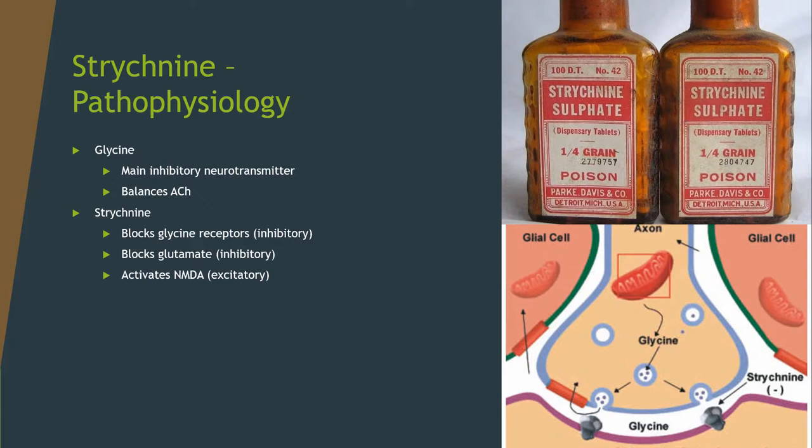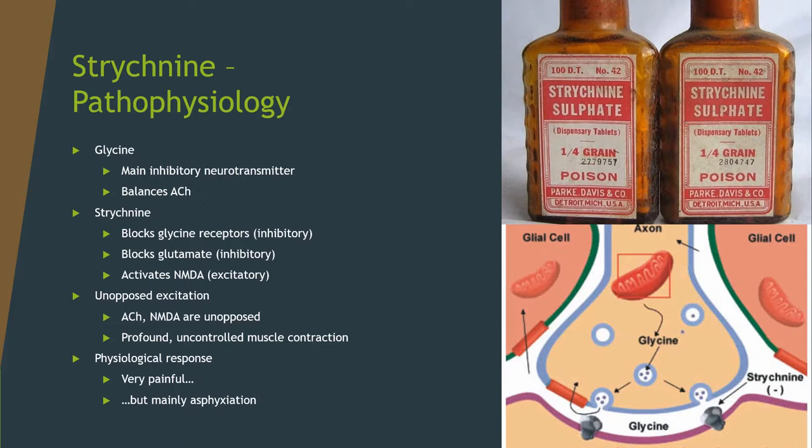Strychnine essentially works by turning off the ability to turn off your muscles. This is incredibly painful, but more critically, strychnine typically causes death by causing contraction of the diaphragm which cannot relax, meaning ventilation cannot occur and the patient dies from asphyxiation. In this way it is very similar to the action of tetanospasmin, the neurotoxin released in tetanus infection.